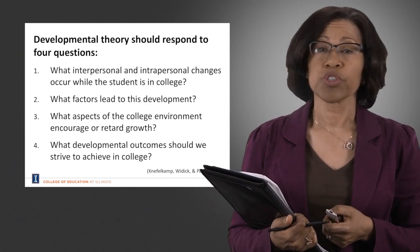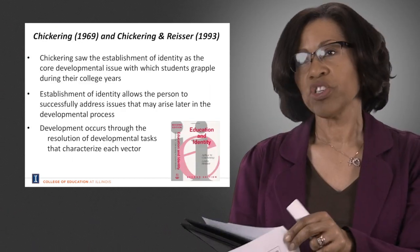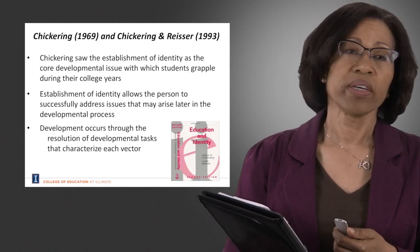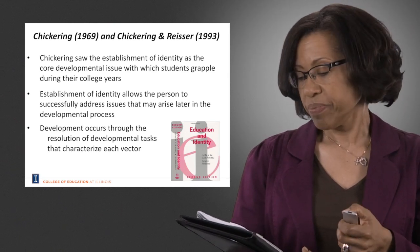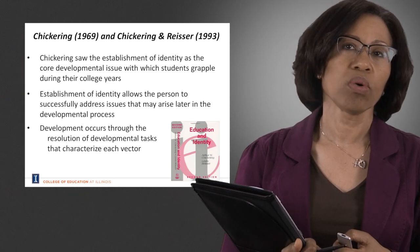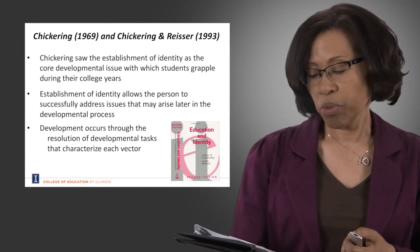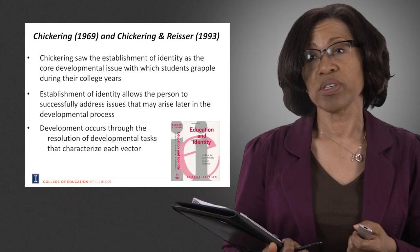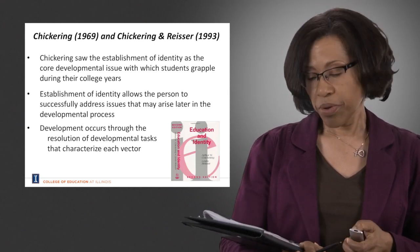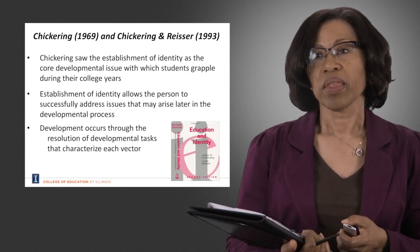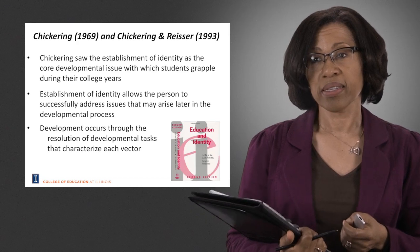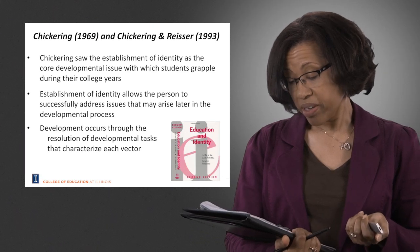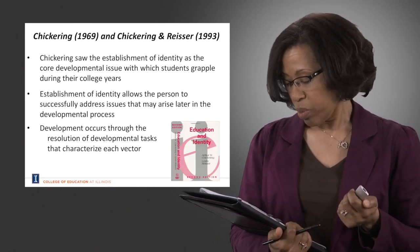A foundational theory in the area of college student development was developed by Chickering and revised again by Chickering and Reiser. They established identity as an essential goal — a critical state that students grapple with as they move through their college years. The establishment of identity allows the person to successfully address issues that may arise later in their developmental process. Development occurs through the resolution of developmental tasks that characterize each vector. Chickering and Reiser identified a series of developmental issues.